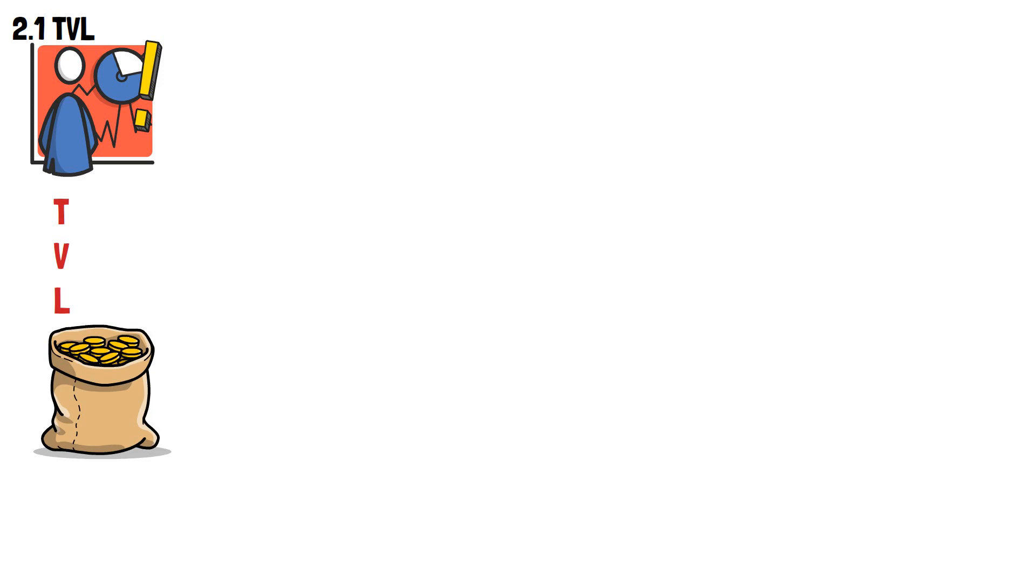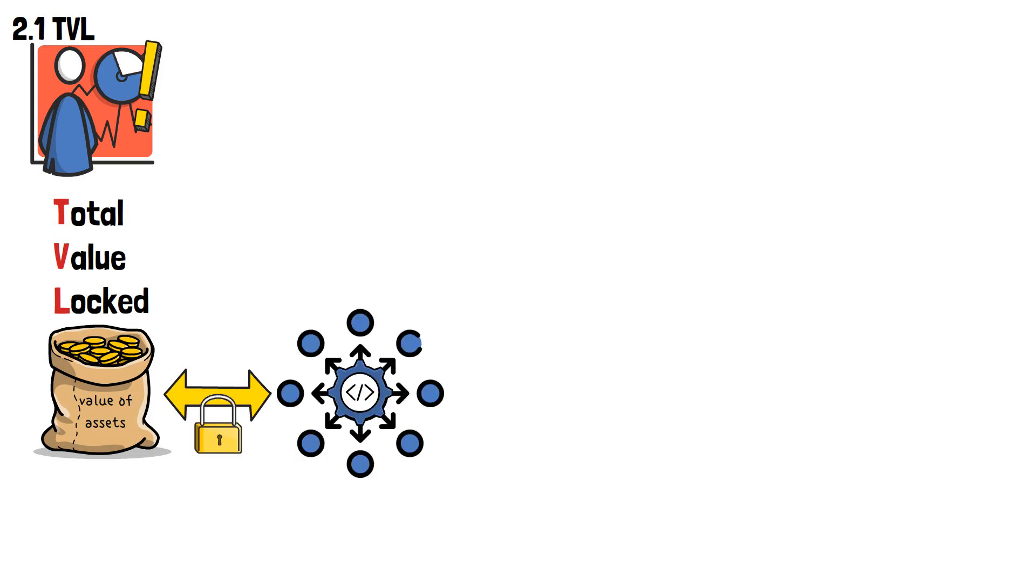First of all, TVL, a very important metric. Three letters that fit everything underneath them. In this case, literally. TVL stands for Total Value Locked, and is a metric used to measure the total value of assets locked into a dApp. In other words, how much have people already invested in it?